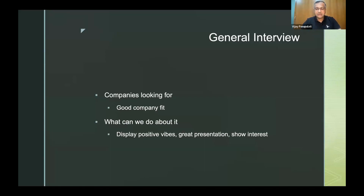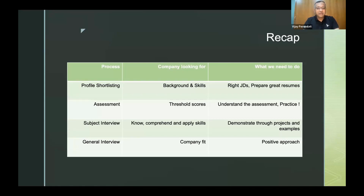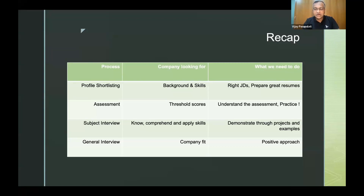To recap: the first step, profiling, rejects about 80 to 90 percent — only 10 to 20 percent make it through. They check background and skills, using automation or HR tools. Make sure you go after the right JDs and prepare a great resume — not just aesthetics but also content, because machines are reading it and the right keywords matter. The second step, assessment, looks for minimum threshold scores; practice as much as you can.